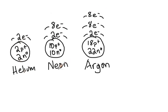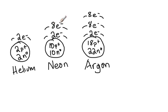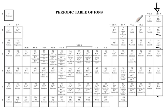So helium, neon, argon, and if we keep going down the list — krypton, xenon, radon, etc. — these are going to be really, really stable because they have filled these valence energy levels, these outer energy levels. On our periodic table, they're examples of some of the most stable elements that we have.